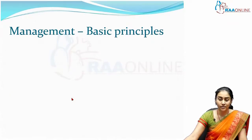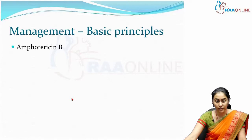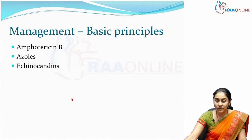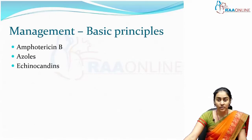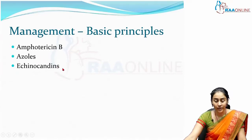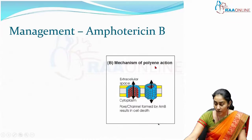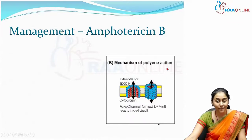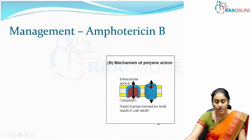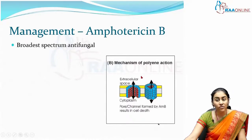Now let's look at the basic principles of management of fungal infections. There are three important categories of antifungal agents. The oldest and broadest spectrum is Amphotericin B. Next are the azoles, and finally we have the echinocandins. Amphotericin B belongs to the group called polyenes. Polyenes bind to ergosterol in the fungal cell membrane and create channels which cause cytoplasmic leakage, making Amphotericin B fungicidal. It is the broadest spectrum antifungal available.